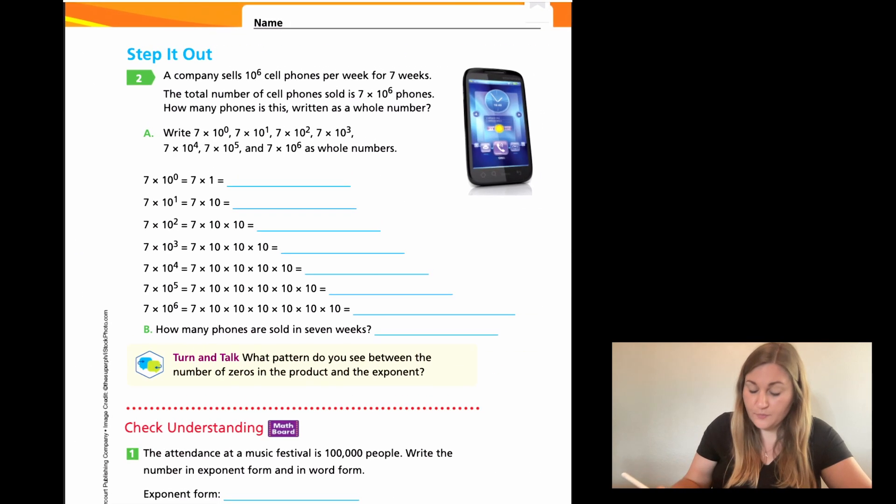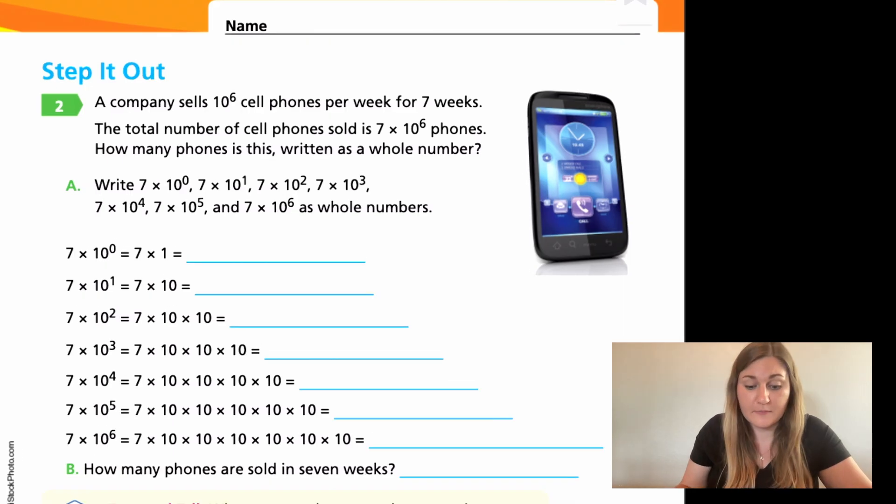So now jumping to page 11, I'm going to be going over number two. This is a company sells 10 to the sixth power cell phones per week for seven weeks. The total number of cell phones sold is seven times 10 to the sixth phones. How many phones is this written as a whole number? Write seven times 10 to the zero, seven times 10 to the one, and so on.